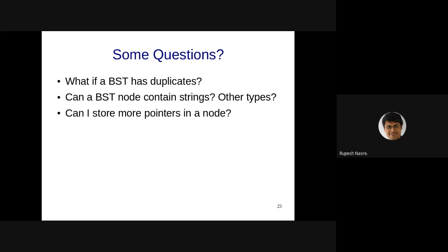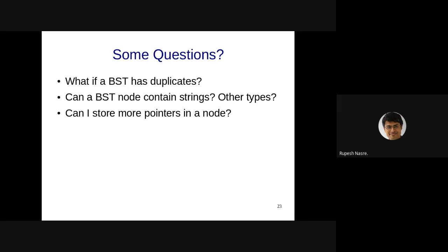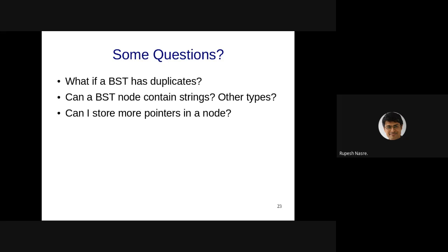These trees are called B-trees and they're used in databases. Where in a regular BST you have one value — say 10 — with left subtree less than 10 and right subtree greater than 10, in a B-tree node you might have multiple values like 10, 20, 30, 40. There are also five pointers: one on the left of 10, one on the right of 40, and three more in between.